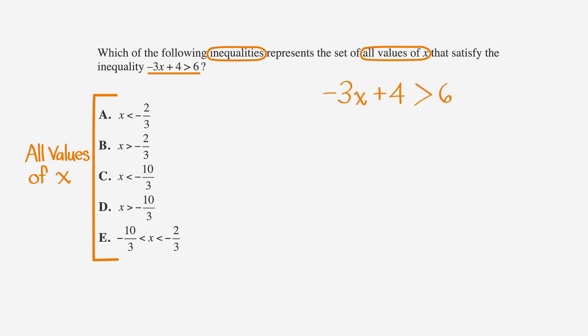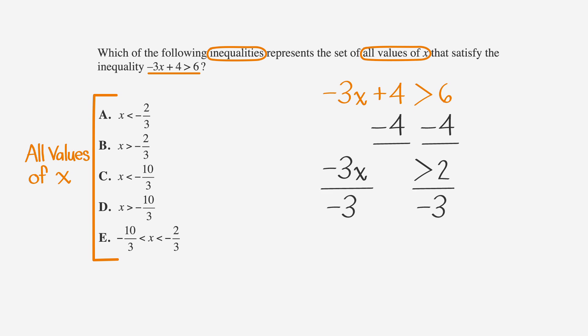We'll start off just like we would if we had an equal sign instead of a greater than sign. We'll subtract 4 from both sides to get negative 3x is greater than 2. Next, we'll divide both sides by negative 3 and flip the sign because we're dividing by a negative number. This gives us x is less than negative two-thirds, which is answer choice A. But check out choice B — it's a trap answer in case you forgot to flip your sign. So always remember to flip your sign when working with inequalities.